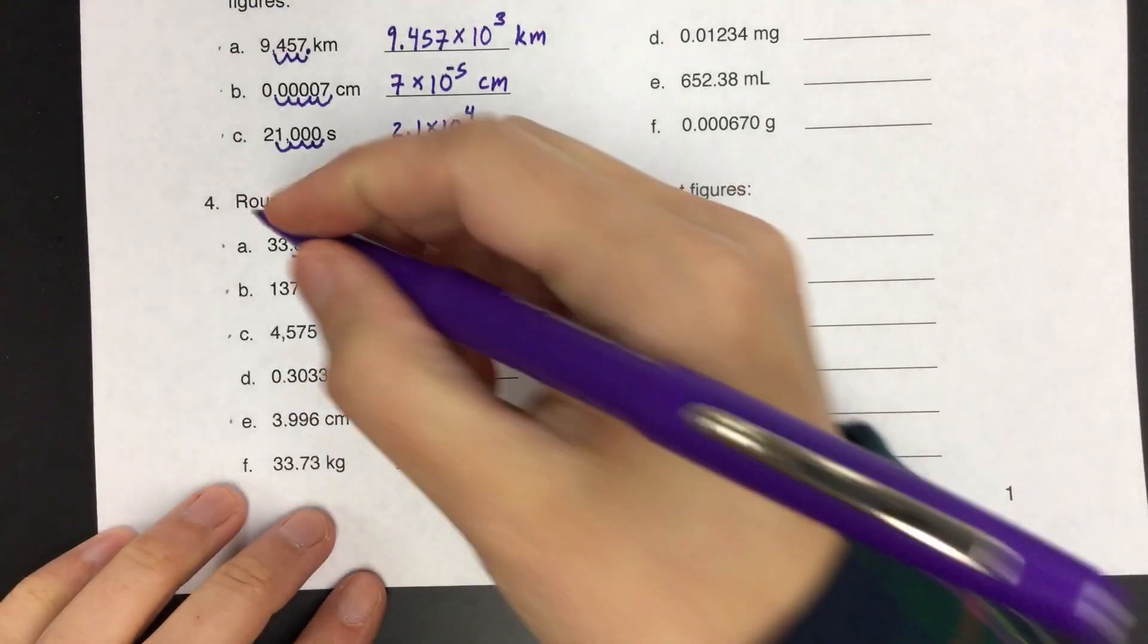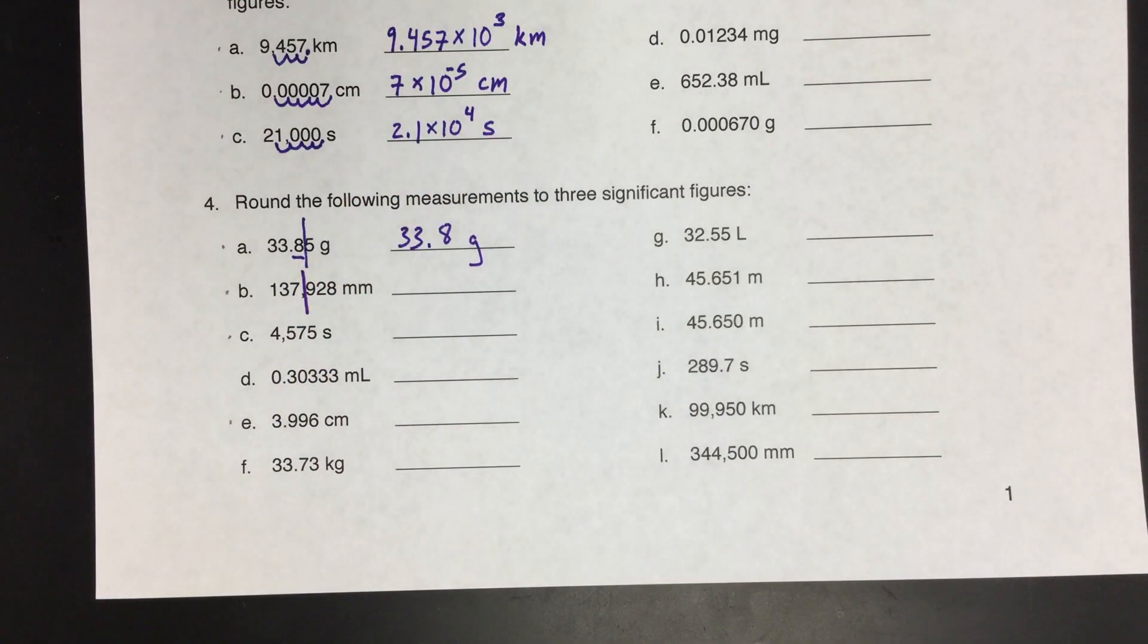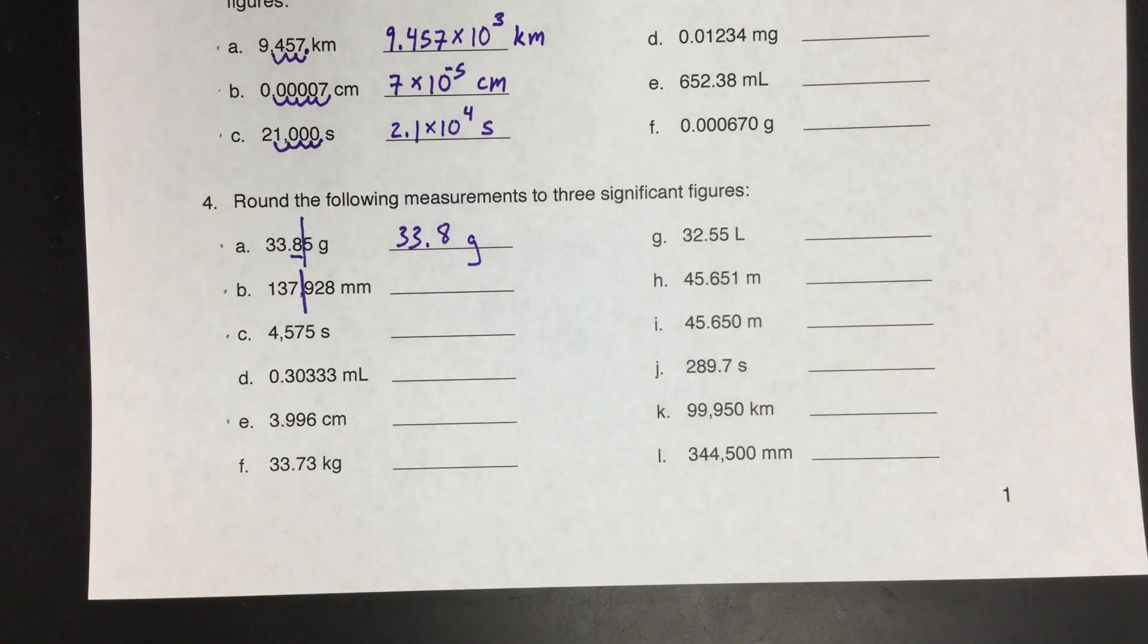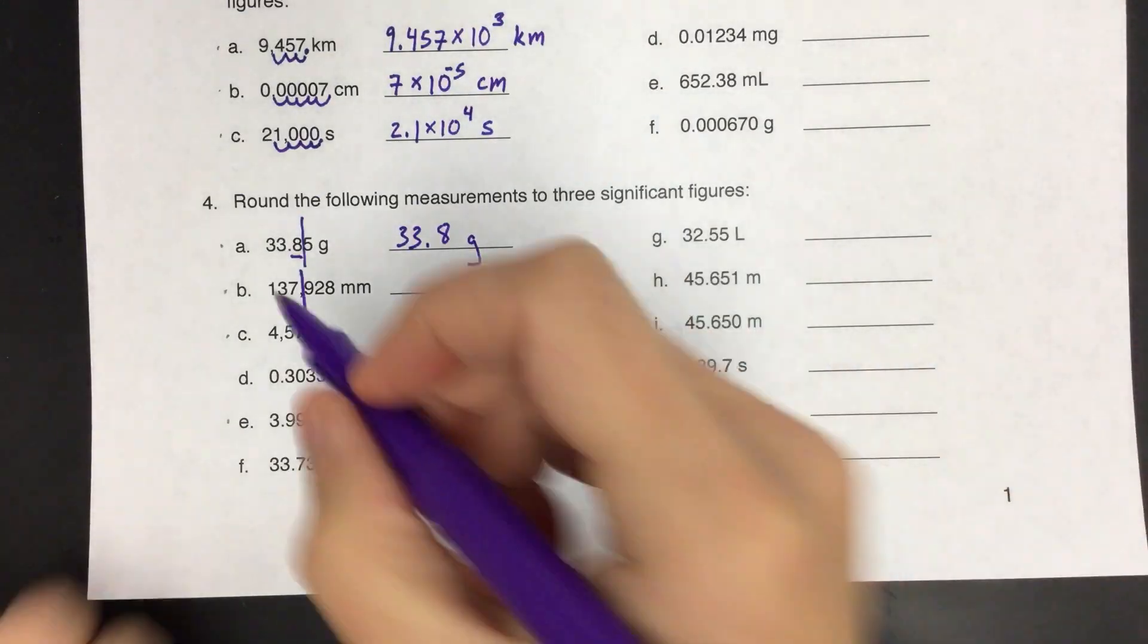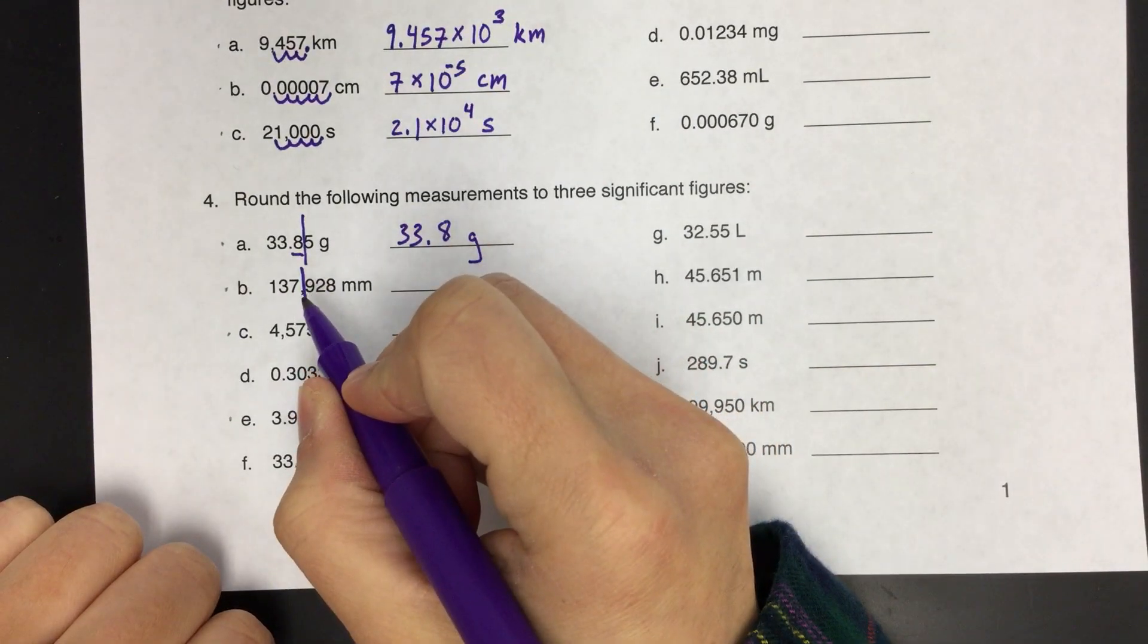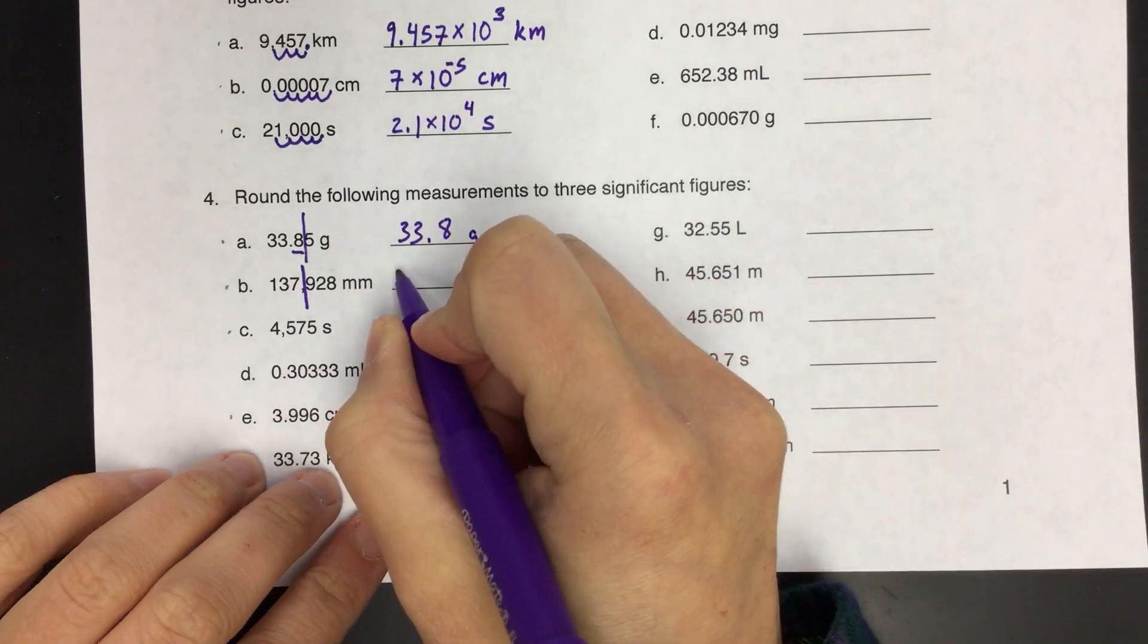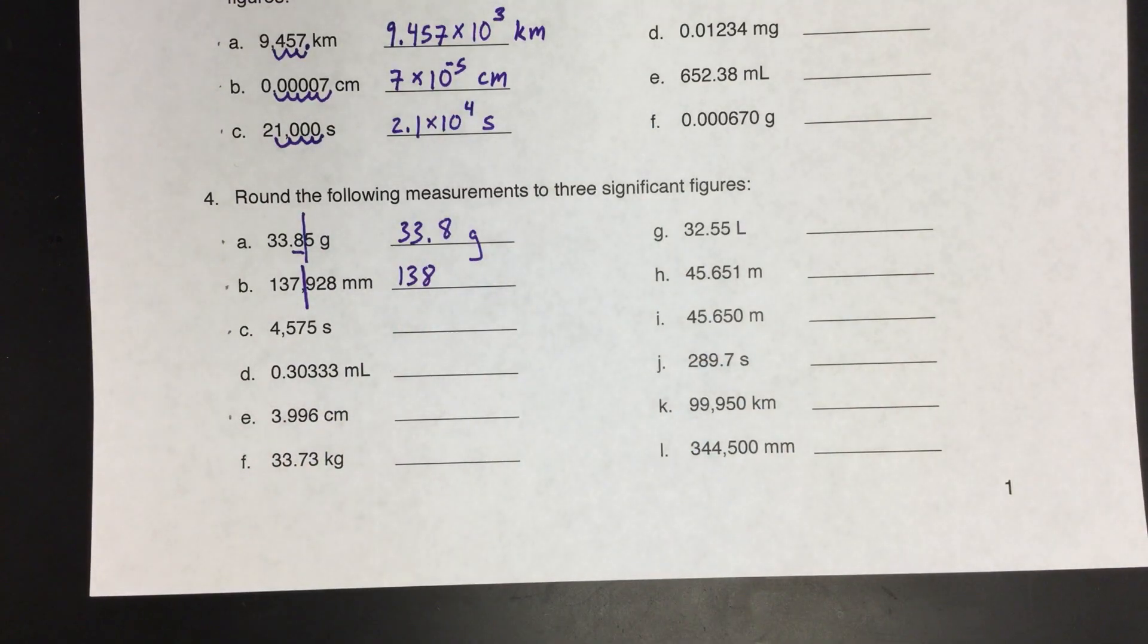Okay, so the next one, again, three sig figs. So I know I need to cut off my number right there, after 1, 3, 7. And the number after that is 9, which is clearly greater than 5. So you already knew this, but if it's greater than 5, you need to round up. So if you round up that 9, it's going to turn to 10, right, which will make this number go up to an 8. So we'll get 1, 3, 8.